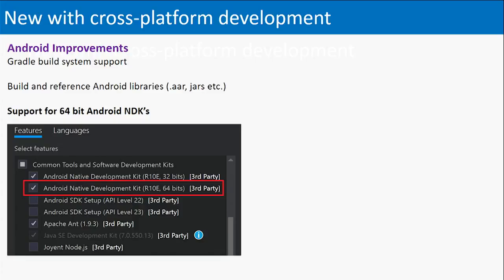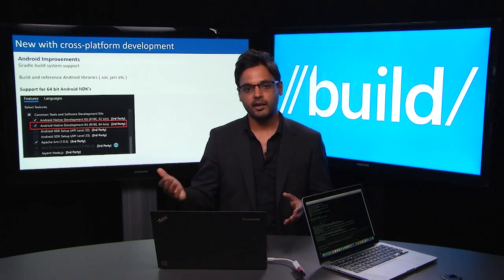The last feature I want to talk about is the support we introduced for 64-bit Android Native Development Kits. If you're a game developer making large monolithic C++ applications, you really need extra memory and extra resources for your compiler and linker tools. That is what the 64-bit Android NDK allows you to do. With this update, you'll be able to install the Android NDK and use it as you build your Android applications.